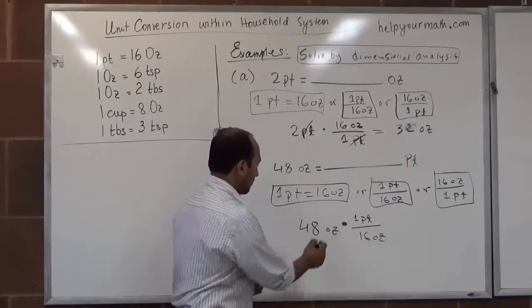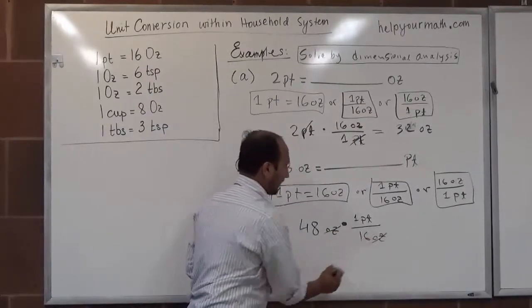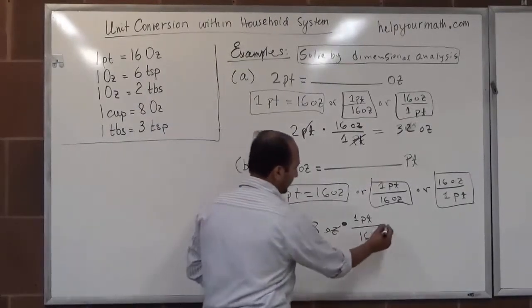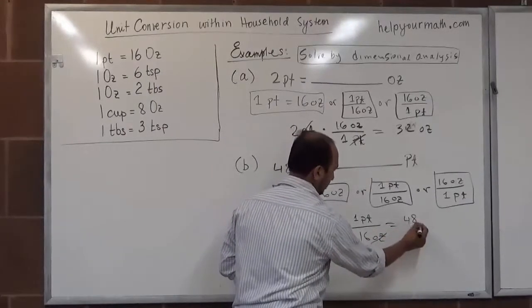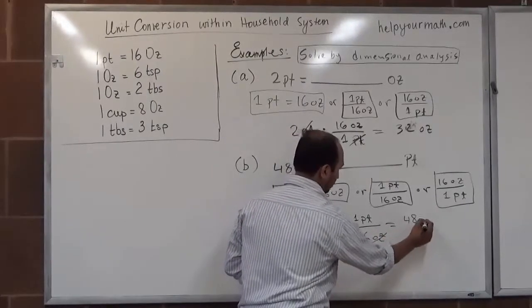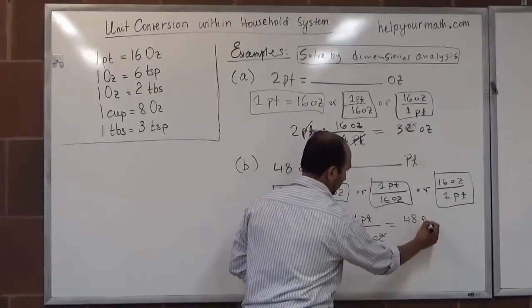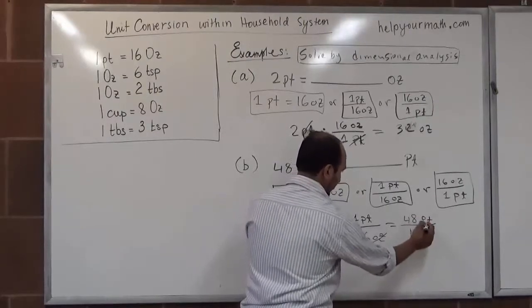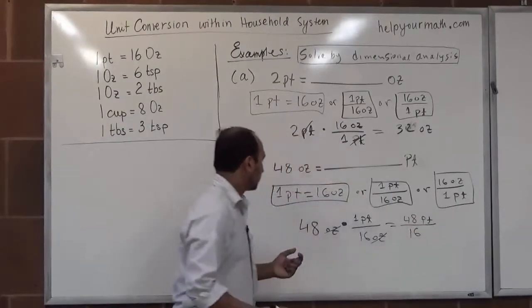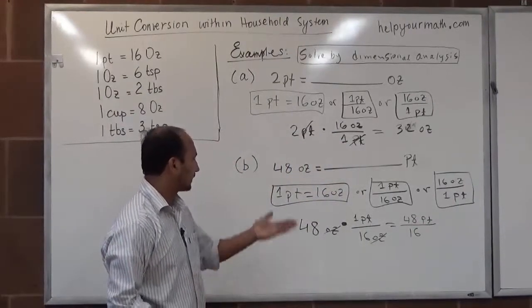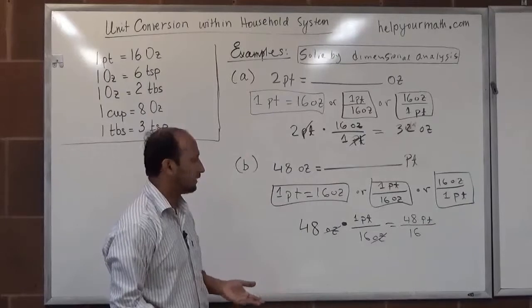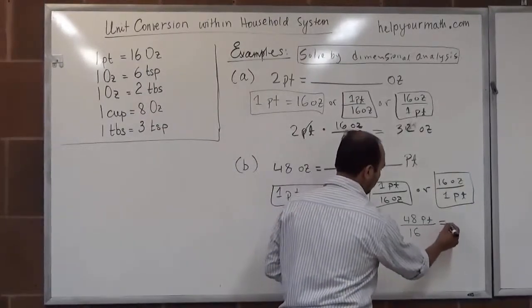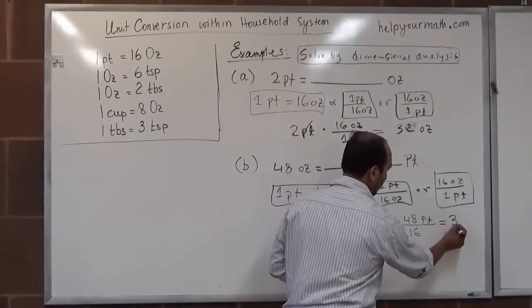Ounces and ounces cancel, so we are going to have 48 pint over 16. How many times does 16 go into 48? We get 3 pints.